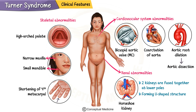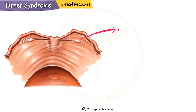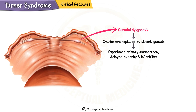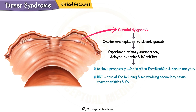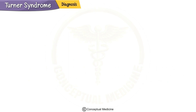Turner syndrome significantly impacts reproductive health. These patients typically have gonadal dysgenesis, meaning their ovaries are replaced by streak gonads, which are non-functional. As a result, most women experience primary amenorrhea, delayed puberty, and infertility. However, with advances in reproductive medicine, many women can achieve pregnancy using in vitro fertilization and donor oocytes. Hormone replacement therapy is also crucial for inducing and maintaining secondary sexual characteristics and preventing osteoporosis.